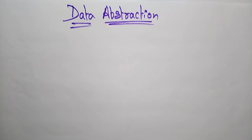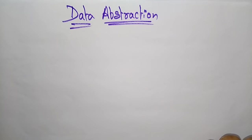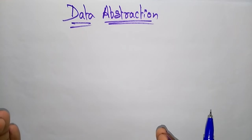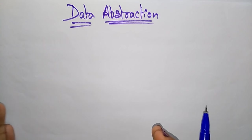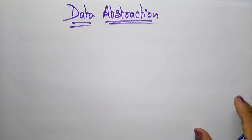Hi students, coming to the next basic concept of object-oriented programming, that is data abstraction. In the previous videos I explained about classes, objects, and encapsulation. Now coming to abstraction. In this video I will explain what exactly abstraction is, and what is the difference between encapsulation and abstraction. I already explained encapsulation, so now just listen about abstraction, then I will show the difference between those two.